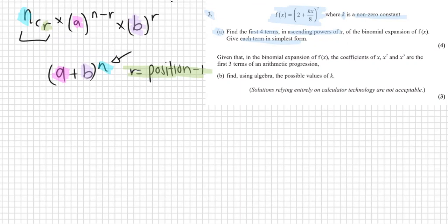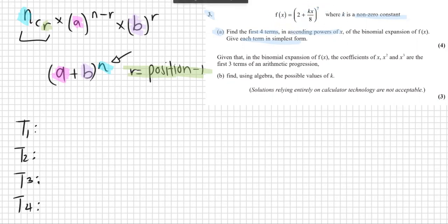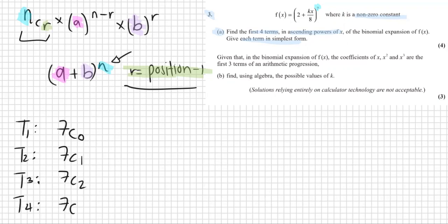So let's start setting up our four terms: T1, T2, T3, and T4. For the nCr part, our n is 7. So we have 7C0 for the first term — position 1, so r equals 0 — then 7C1, 7C2, and 7C3.